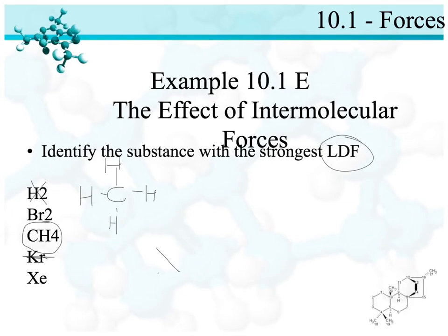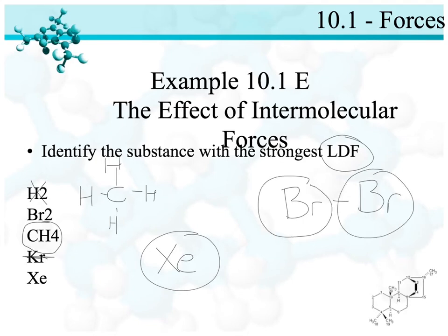Xenon definitely has the most shells with six. But then, our bromines, even though they have one less shell each than xenon, there are two bromines. So while the individual bromine atom is smaller, our Br2 is probably the strongest, the largest of this group, and has the strongest LDF forces.